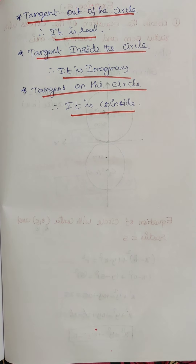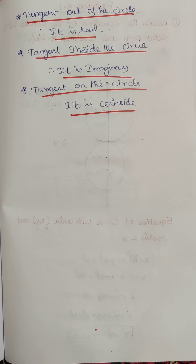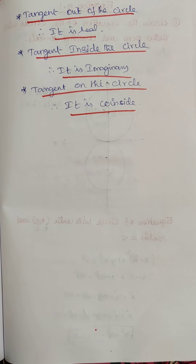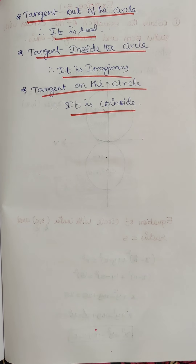This is the basic introduction for Exercise 5.1 of Chapter 5. Understanding these concepts will make solving problems much easier. The tangent inside the circle is imaginary, on the circle is coincident.